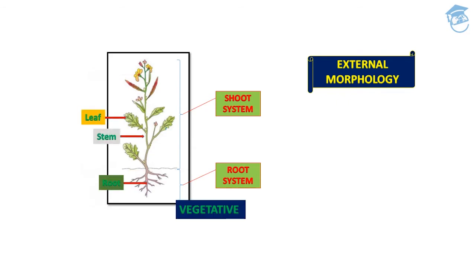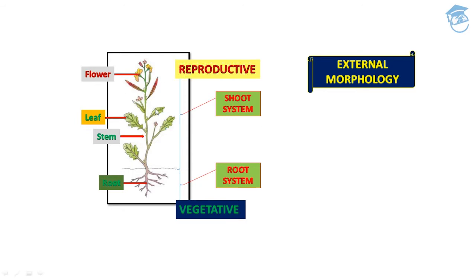Let's see all parts once again. Please note that the root system is vegetative in nature, whereas the shoot system, because of the flower, is reproductive in nature.